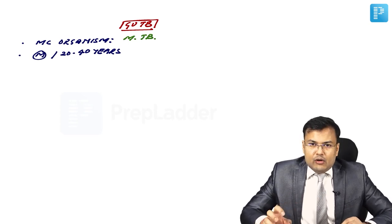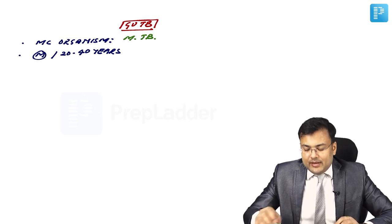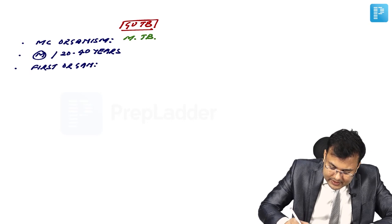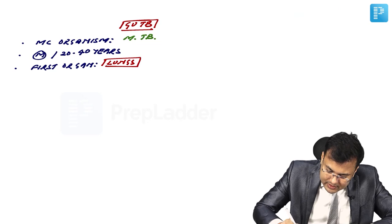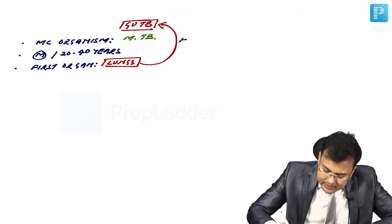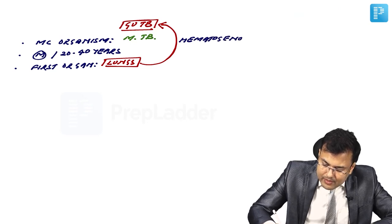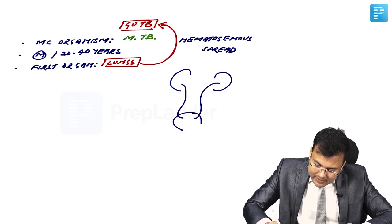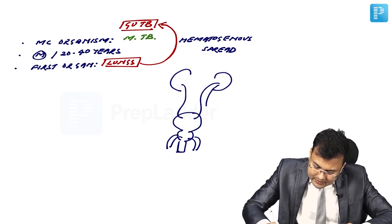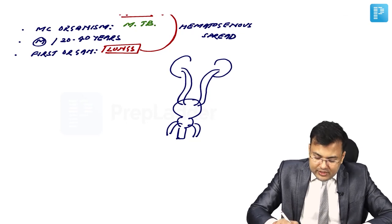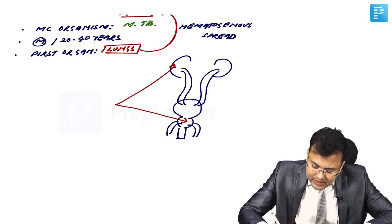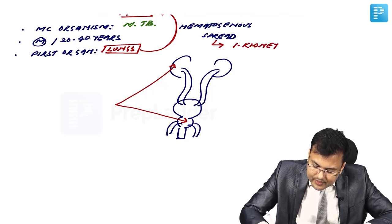The first organ affected in genitourinary tuberculosis is the lungs. From the lungs, the infection reaches the genitourinary tract by hematogenous spread. Via hematogenous spread, two organs are primarily affected: the kidney and the prostate.